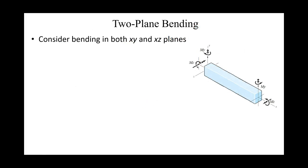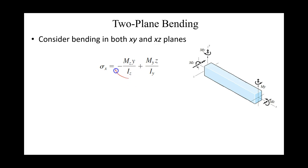Let's look at a beam that has two-plane bending. In previous beams, we only investigated bending in the y-x plane. But now, due to a moment in the y-direction, we have bending in the x-z plane as well. To solve for the bending stresses in the x-direction, we simply use the flexure formula about both axes.